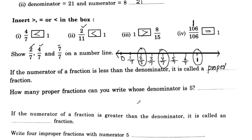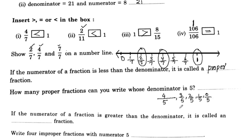How many proper fractions can you write whose denominator is 5? With denominator 5, the numerator must be less than 5. So we can write: 4 by 5, 3 by 5, 2 by 5, 1 by 5, and 0 by 5. Counting them: 1, 2, 3, 4, 5 — total 5 fractions.